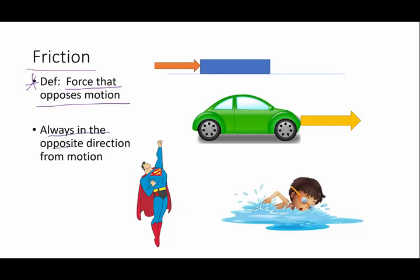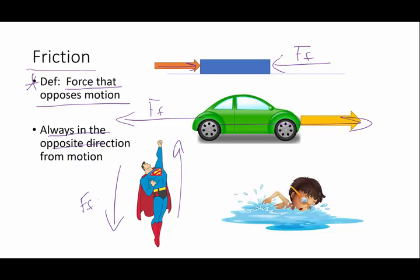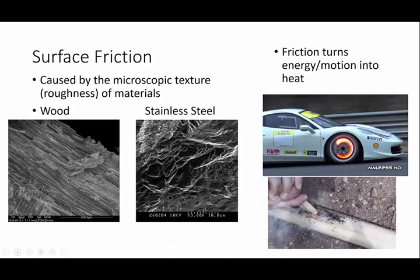It's always going to be in the opposite direction. So if I push on a book to the right, friction force is going to act to the left. If my car is going forward, friction force is going to push in the opposite direction. If Superman is flying up, then the force of air friction on Superman is going to be down. If a child is swimming forward, then the friction force in the water is going to be backwards. So that's simple - it's always in the opposite direction.